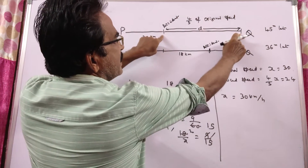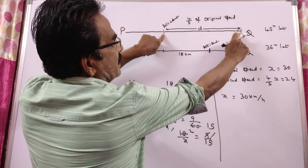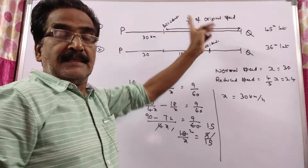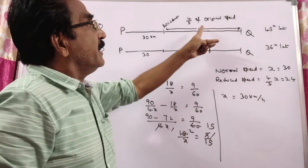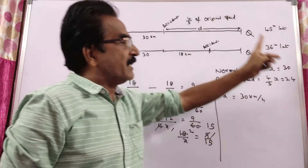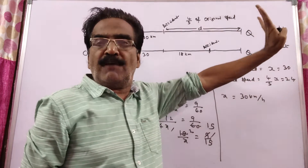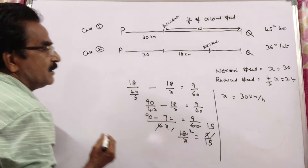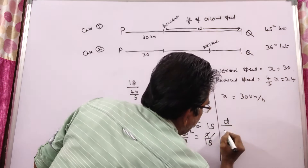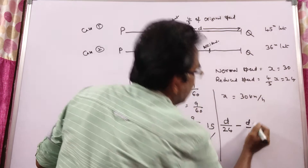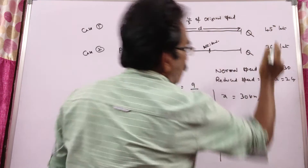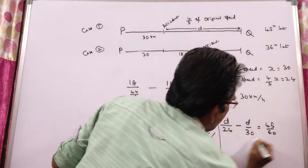Friends, say this distance is D km. The difference between D km travelled with normal speed and D km travelled with reduced speed is equal to 45 minutes. So D/24 minus D/30 equals 45/60 hours. Taking LCM as 120: